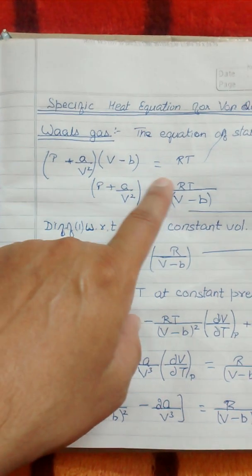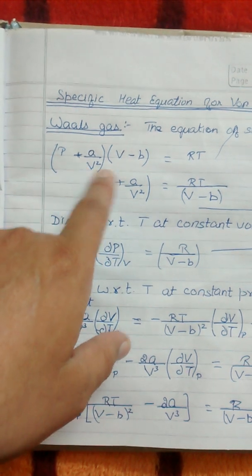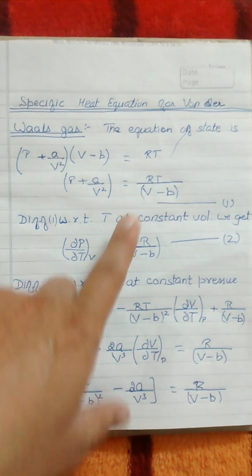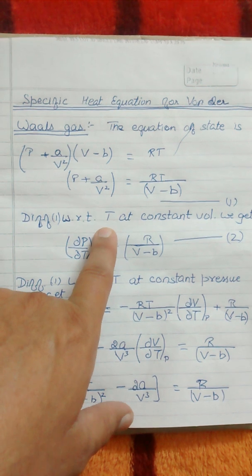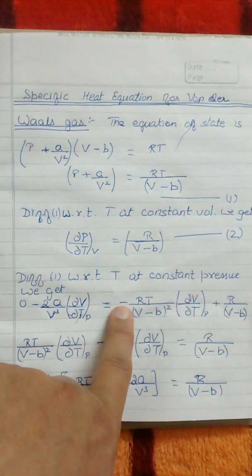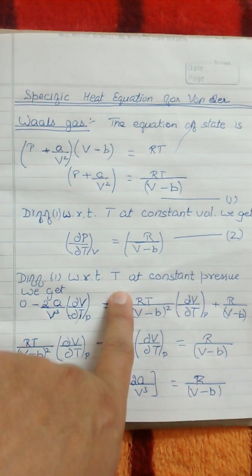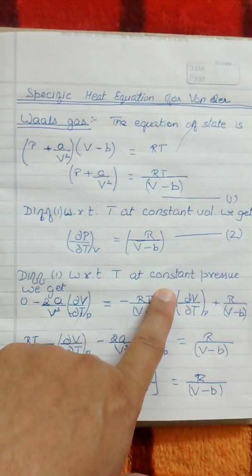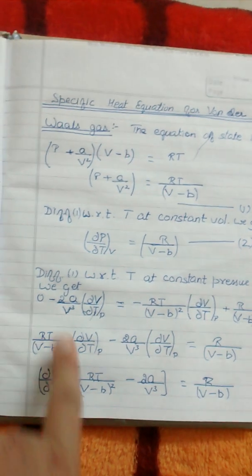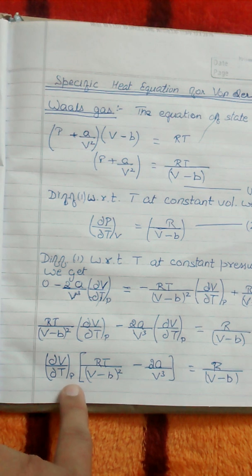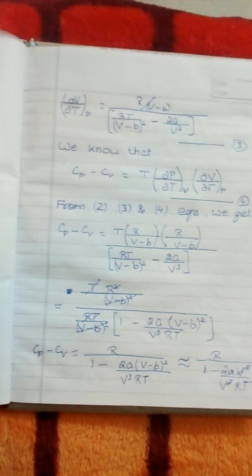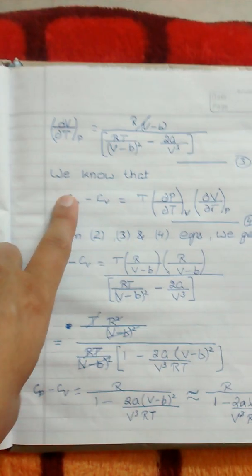Now we will take the Van der Waals gas equation. Taking this term in the denominator, we differentiate with respect to temperature keeping volume constant for pressure. We get three terms, then taking this term to the other side, we factor out dV/dT at constant pressure.